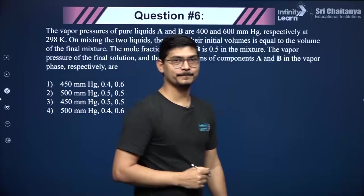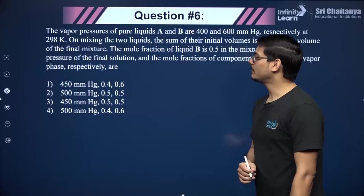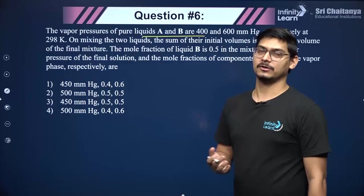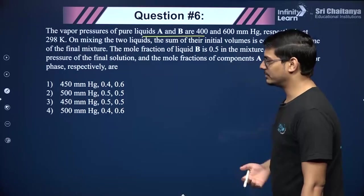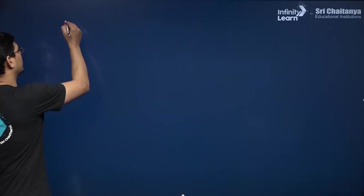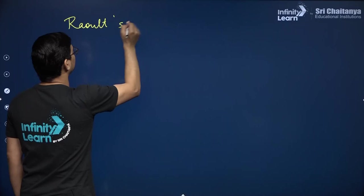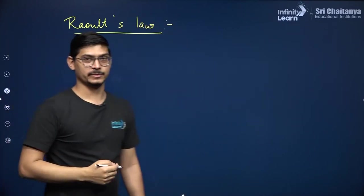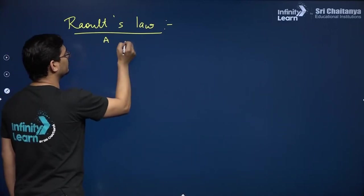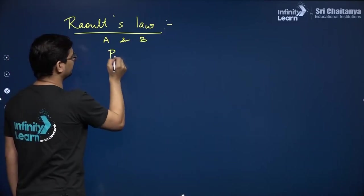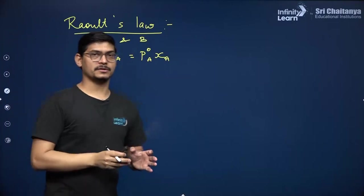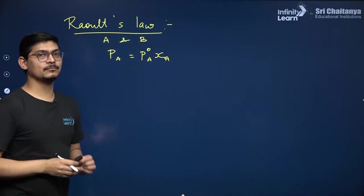Moving to the next question on Raoult's law. Whenever we talk about vapor pressures of two liquids, it is based on Raoult's law. Raoult's law is applicable to a mixture of volatile liquids. According to Raoult's law, if there are two liquids A and B, both volatile, the partial pressure of A is pA = p°A·xA, and partial pressure of B is pB = p°B·xB. The total pressure by Dalton's law is p = p°A·xA + p°B·xB.